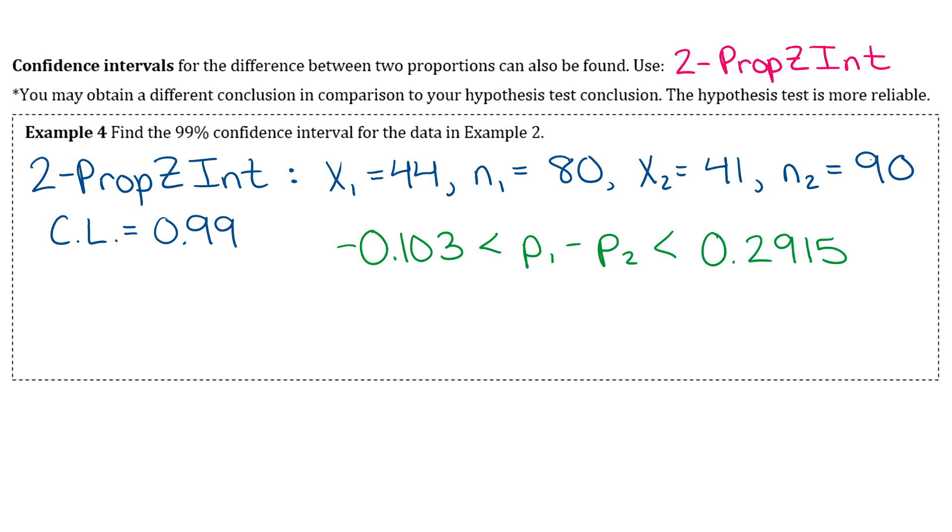This is the confidence interval for the difference between the two proportions, so in between we're going to say p1 minus p2. Just like our last couple sections, you're looking for whether or not zero falls in that range. Since zero is in the interval, we do not reject the null hypothesis.